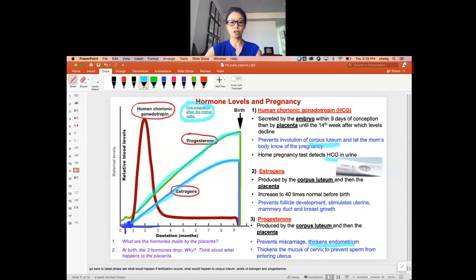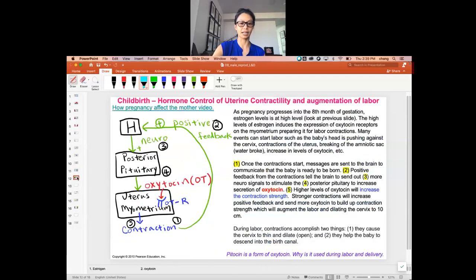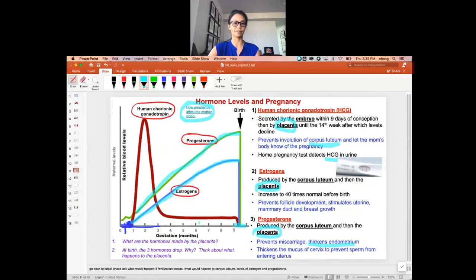You can really look at these hormones. HCG, progesterone, estrogen, actually all three of them are made by the placenta. At delivery, at birth, you can see all three hormones dropped to basically none. That is because at labor and delivery, the placenta is delivered. We'll talk about that in just a few minutes. So that is the hormones of pregnancy.